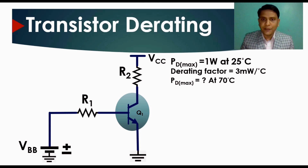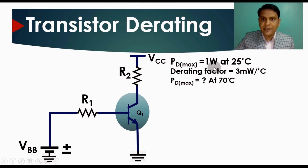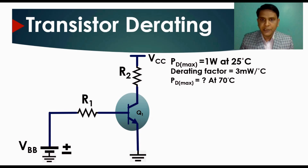Now we need to calculate the maximum power dissipation at 70°C. At 25°C, transistor Q1 has a maximum power dissipation of 1 watt. We want to find how much power this transistor can dissipate at 70°C.